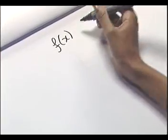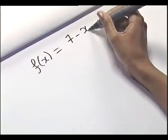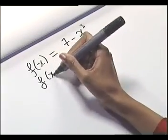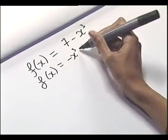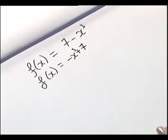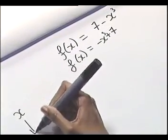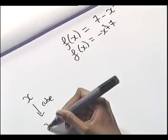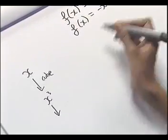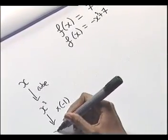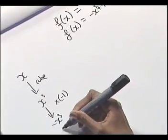Here's one more example of how we can undo the operations of f to work out its inverse. Let's have f of x being 7 minus x cubed. I'll rewrite this as minus x cubed plus 7 to make it easier to see which operations we're doing to x. We start with x, we cube it to get x cubed, then we send x cubed to minus x cubed by multiplying by minus 1, and finally we add on 7.